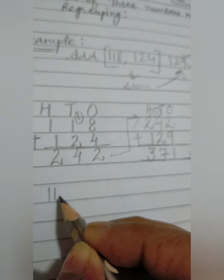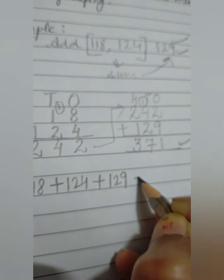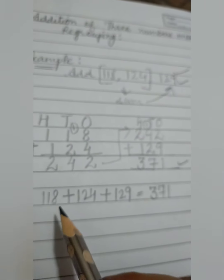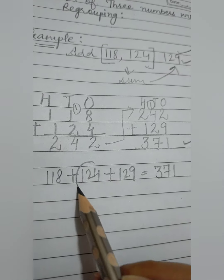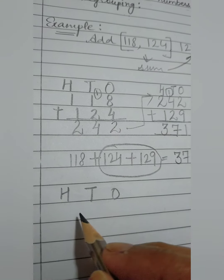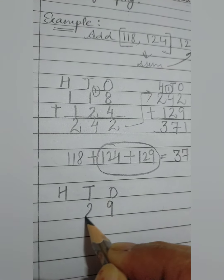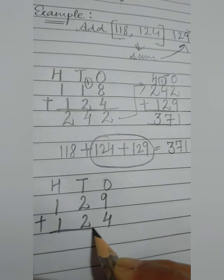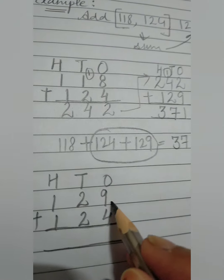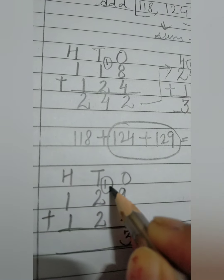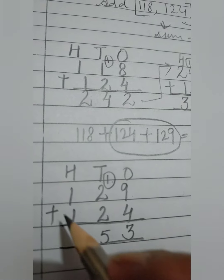So when we added 118 plus 124 plus 129, we got 371. Now if we change the order — firstly adding these two — ones, tens, hundreds: 129 plus 124.